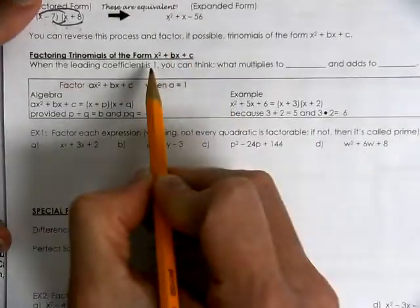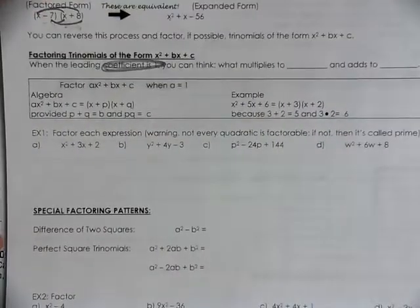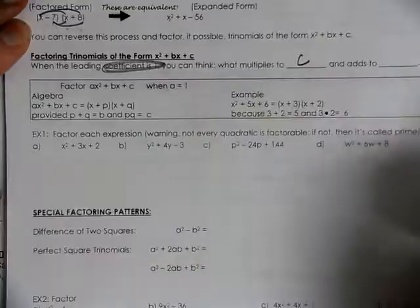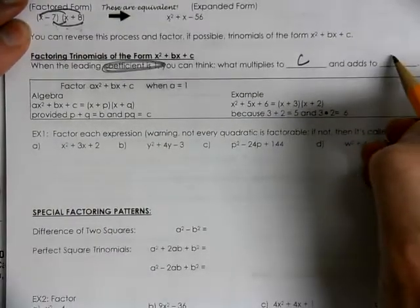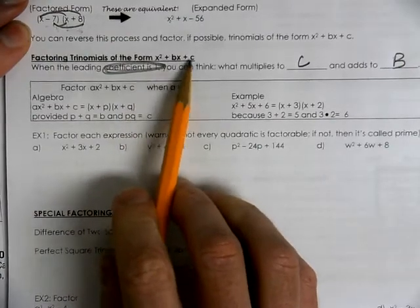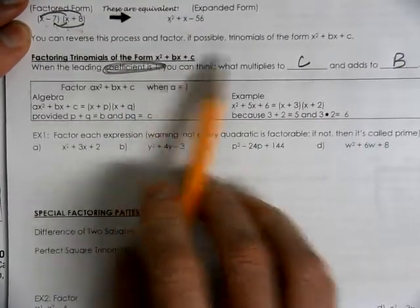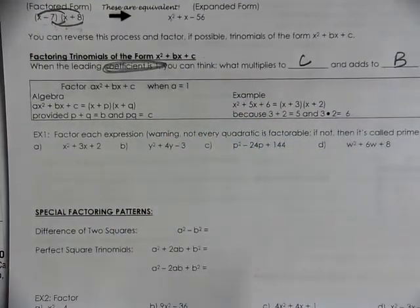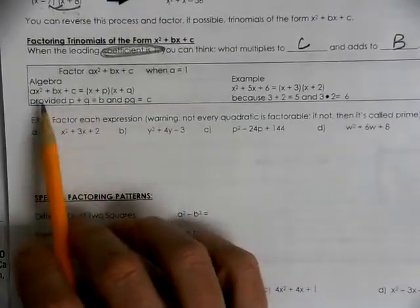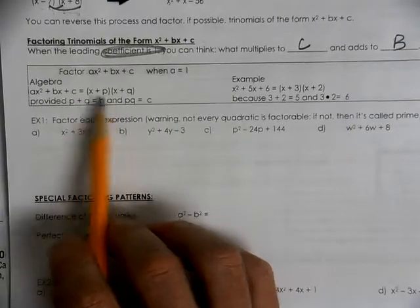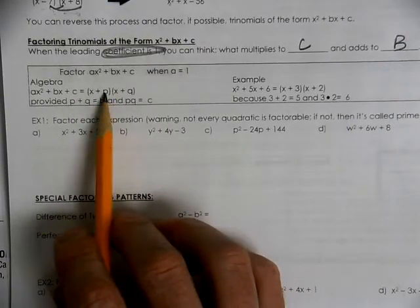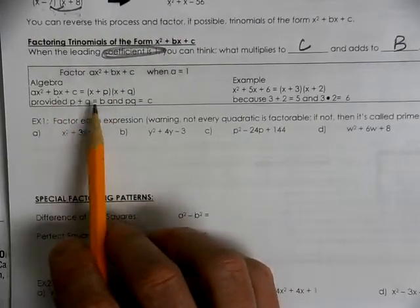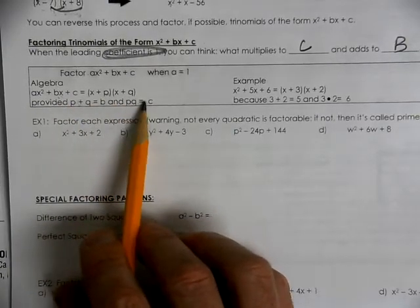So when we work with the basic ones, the ones that have a leading coefficient of one, we need to think about what multiplies to be the c term and adds to be the b term. Looking for two numbers that will get dropped into the parentheses that are going to add to be the b value and multiply to be the c value.